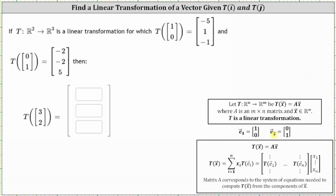Notice how the vector (1, 0) is e sub 1 and the vector (0, 1) is e sub 2, again in R2. This means the transformation matrix A is going to be a 3 by 2 matrix, since we are mapping from R2 to R3, where the first column is the transformation of e sub 1, which is (-5, 1, -1), and the second column is the transformation of e sub 2, which is (-2, -2, 5).